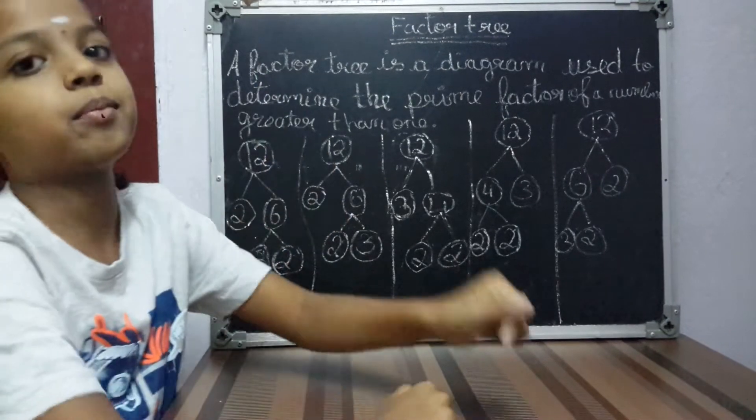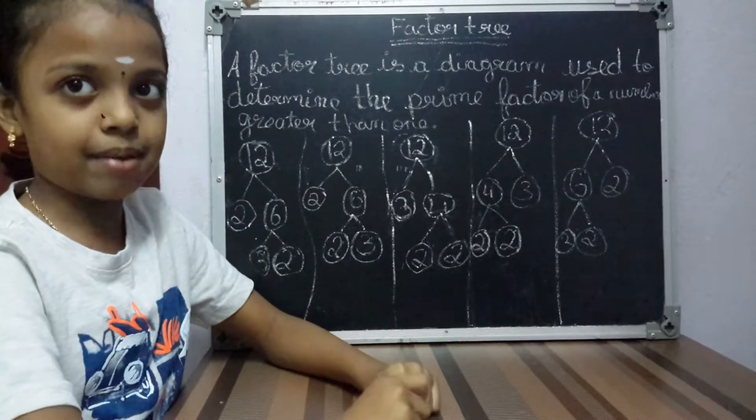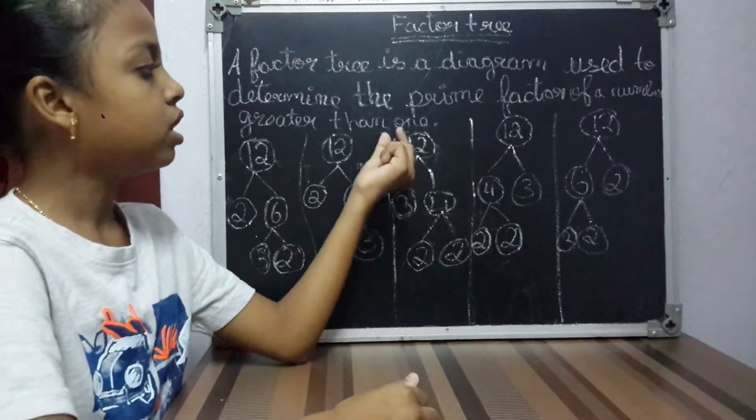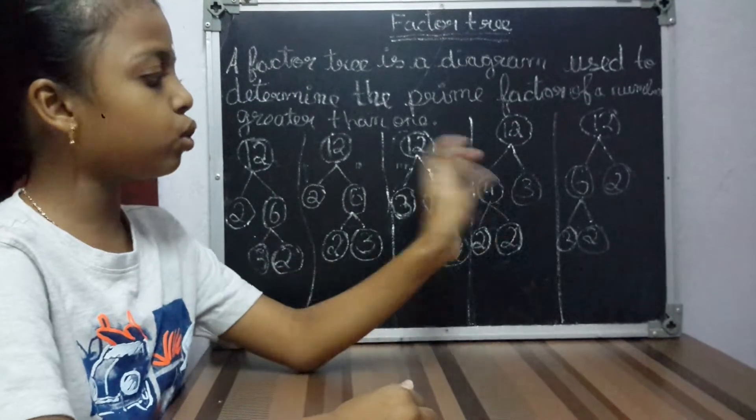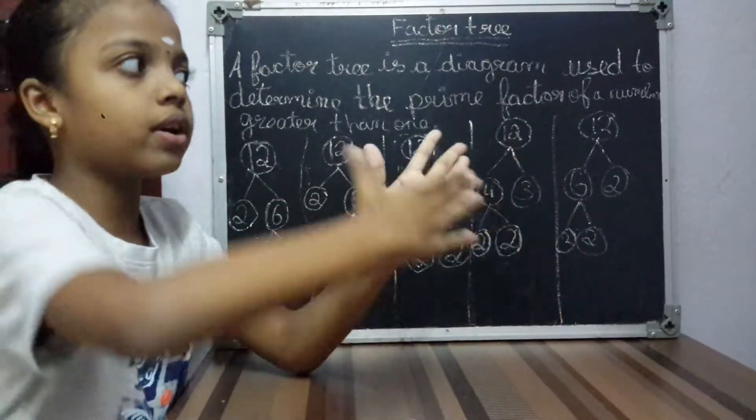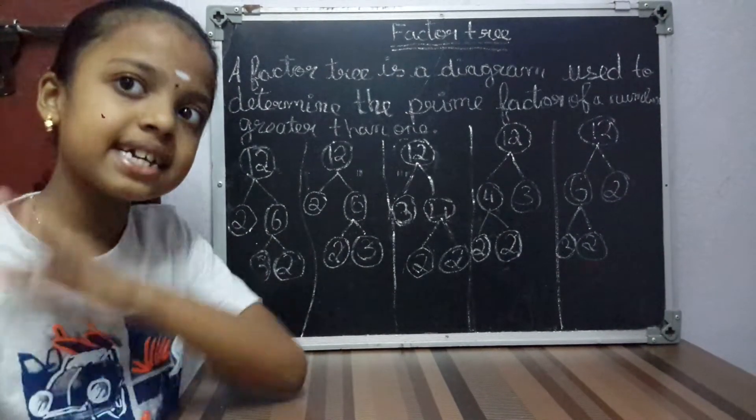Now let's go to an example for the beginning. For example, I took the number 12. How to form a factor tree for this? First, always if you want to make a factor tree, you should know the multiplication tables.